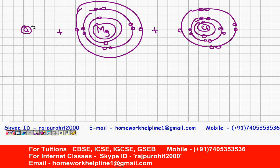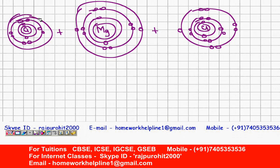Similarly, the second chlorine atom has 2 electrons in the first orbit, 8 electrons in the second orbit, and 7 electrons in the third orbit. Now one electron from magnesium will be transferred to the first chlorine atom, and the other electron will be transferred to the second chlorine atom.